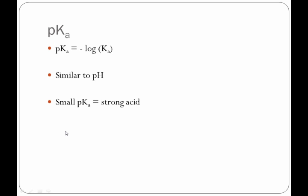What's different here is that if you recall, a large Ka equals a strong acid. But because you're taking the log of the Ka, when we're talking about pKa values, it turns out that a small pKa equals a strong acid. So they're kind of the opposite of one another.